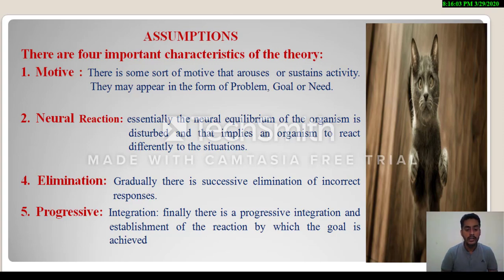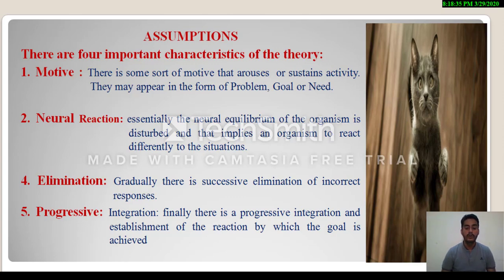Second point is neural reaction. According to Thorndike, essentially the neural equilibrium of the organism is disturbed and that impels an organism to react differently in the situation. In an initial stage, when an organism is exposed to the stimulus, it behaves differently or meaninglessly. The organism's neural equilibrium is disbalanced due to neuron reactions, causing it to behave in random, meaningless ways.